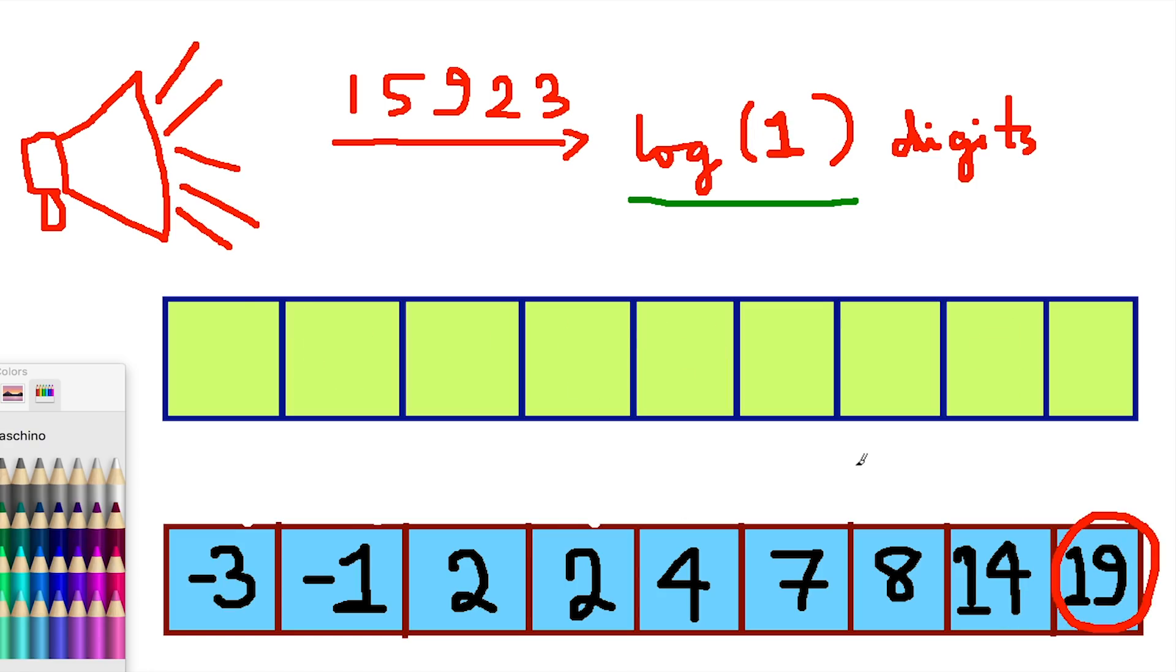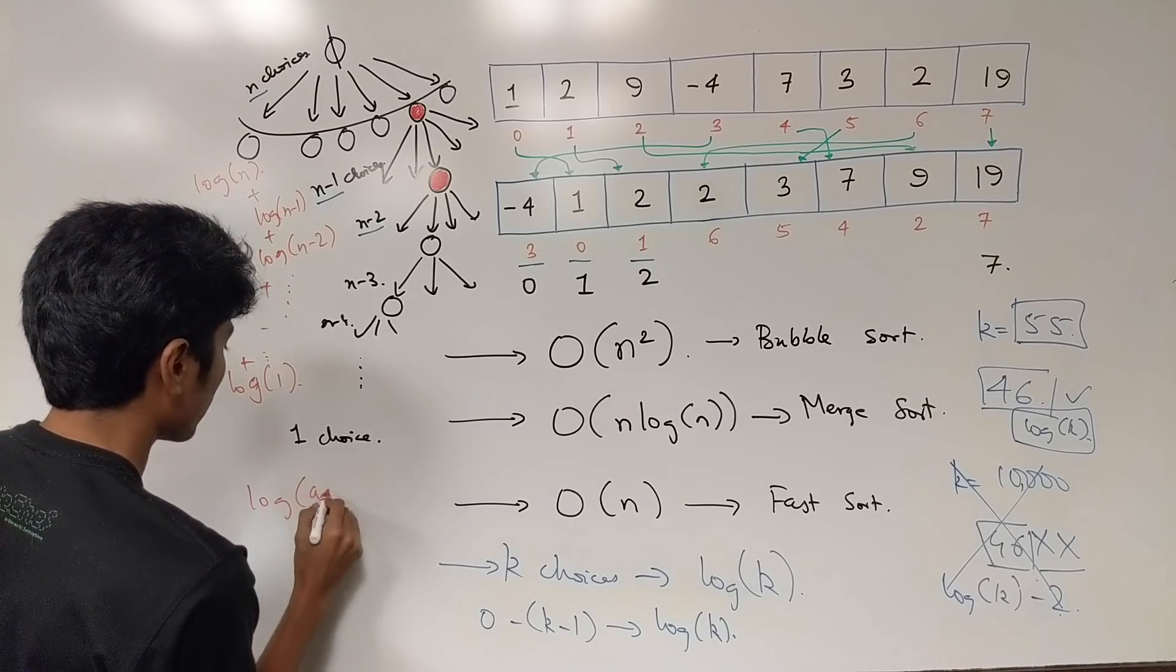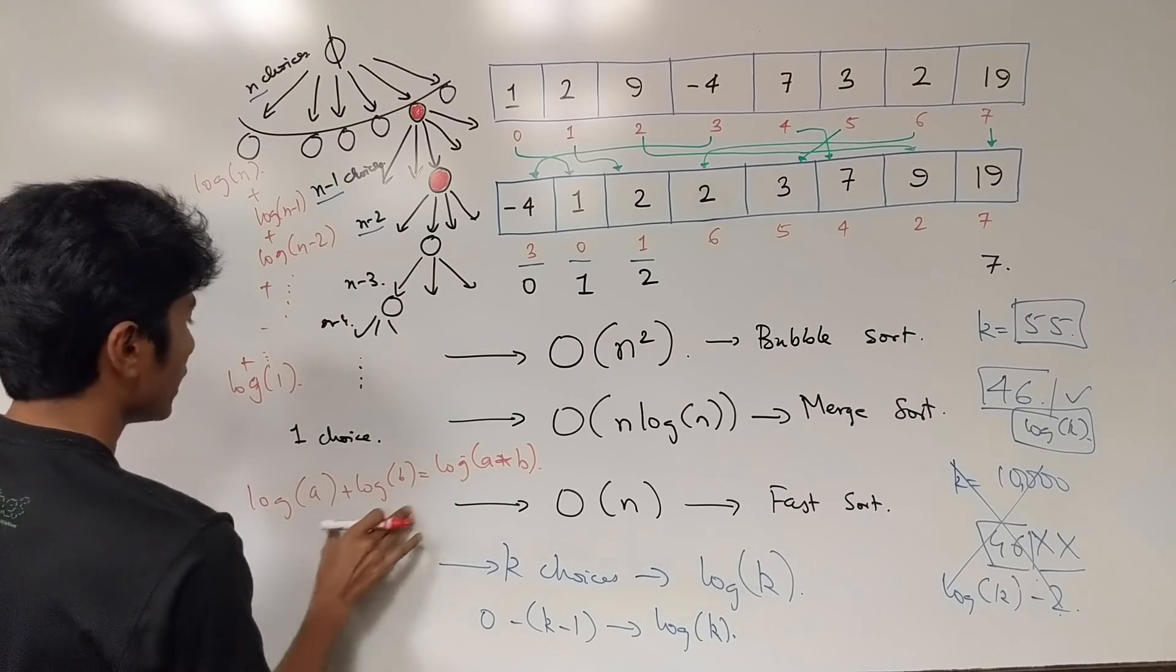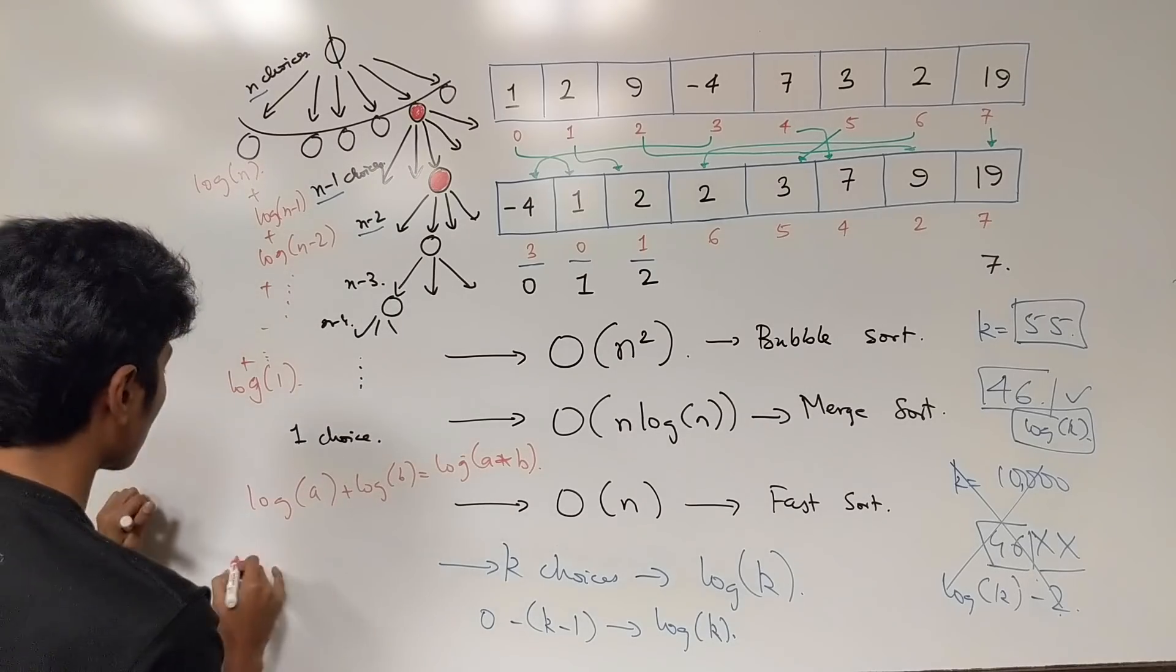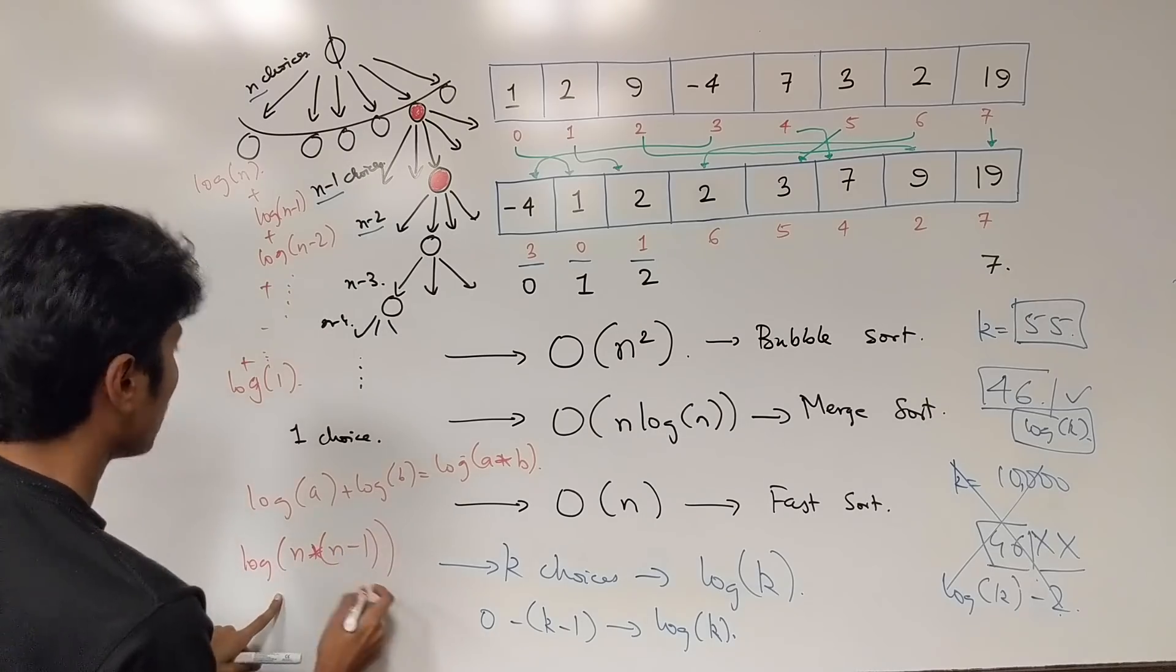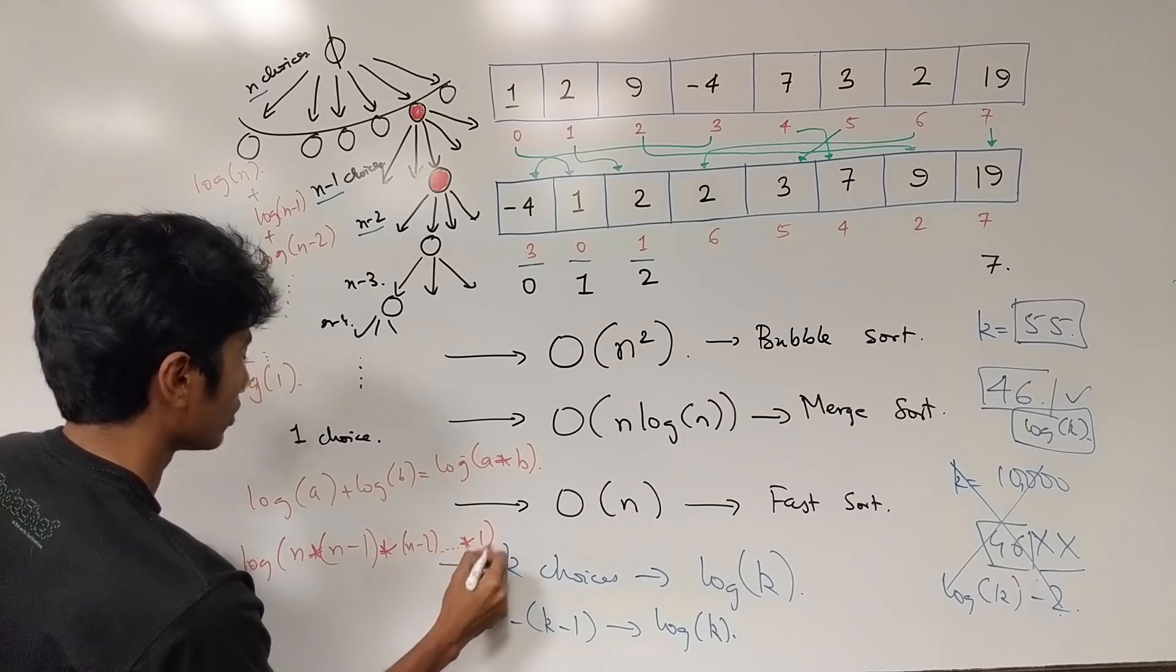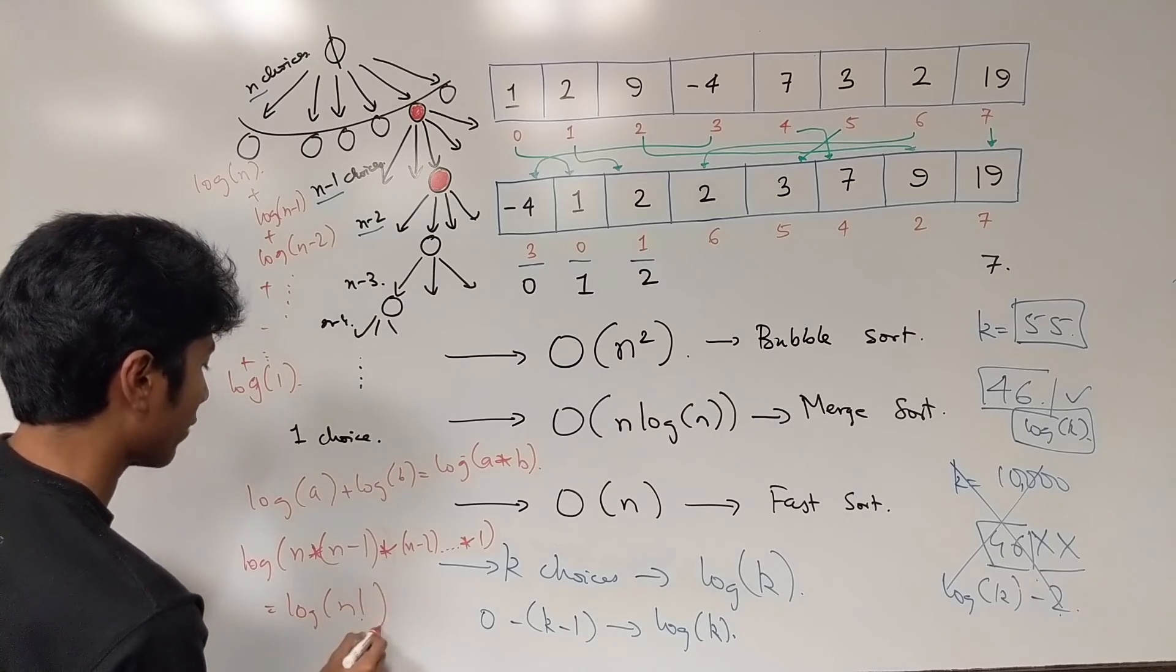The total time you will require is a summation of all of these. And there is a formula log of a plus log of b is equal to log of a into b. This is high school math basically. And when we apply this formula over here log n plus log n-1 that turns out to be log of n into log of n-1 and there's lots more coming. So this is into n-2 so on and so forth into 1 here in the end. And this turns out to be log of n factorial.